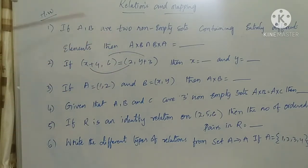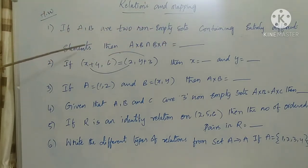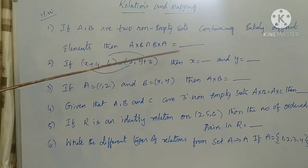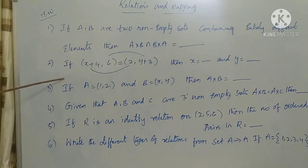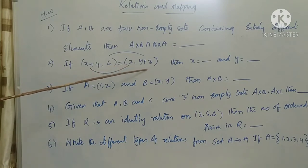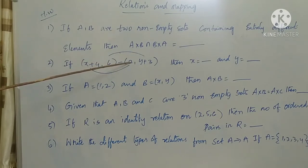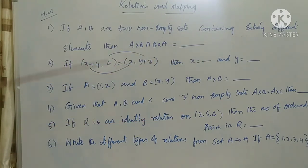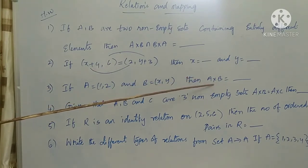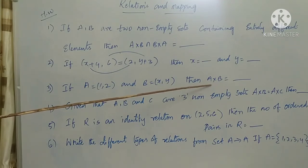This is your homework. First question: if A and B are two non-empty sets containing entirely different elements, then A cross B intersection B cross A equals what? Second question: if ordered pairs (x+4, 6) equals (2, y+3), find the values of x and y. Third question: if A equals {1, 2} and B equals {x, y}, find A cross B and all possible relations from A to B.